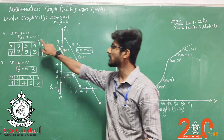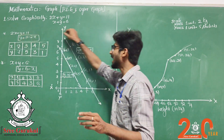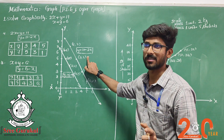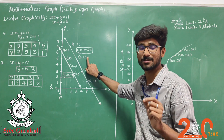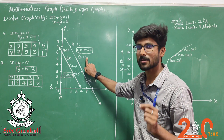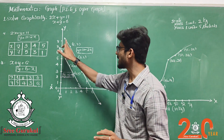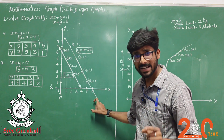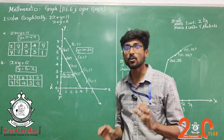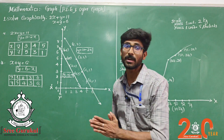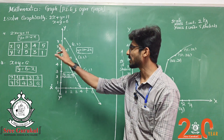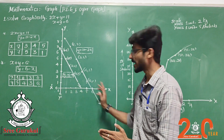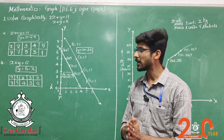Looking at the highlights of this graph: mention both equations — either the transposed form or the original equation given. It is very necessary to mention the coordinate points as well as the equation, especially if you are trying for 10 out of 10. Also ensure you draw arrowheads on the obtained lines, and label the axes as X, X-dash, Y, and Y-dash. This completes your Pair of Linear Equations graph.